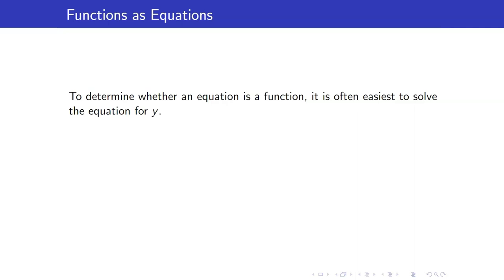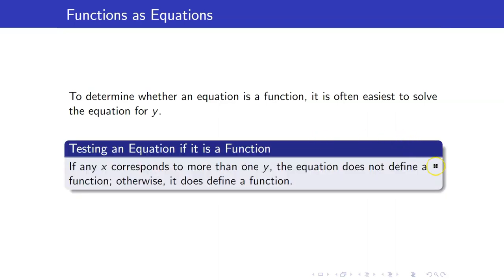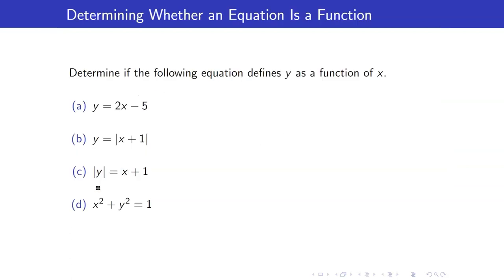Given a relation represented as an equation, let us check whether it will be a function or not. The first thing you need to do is solve the equation for y, because you want to make sure that x corresponds to exactly one y. If the equation corresponds to more than one y, then it does not define a function. For letter a, y is equal to 2x minus 5. For each element of x, it corresponds to exactly one element of y — yes, this is a function.